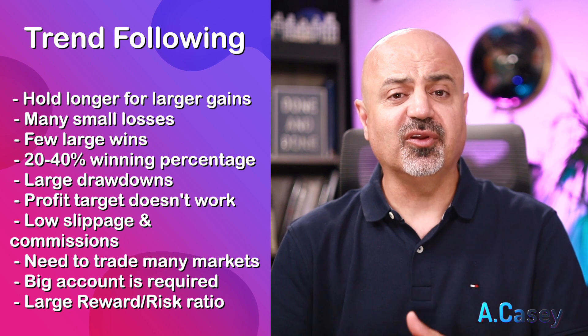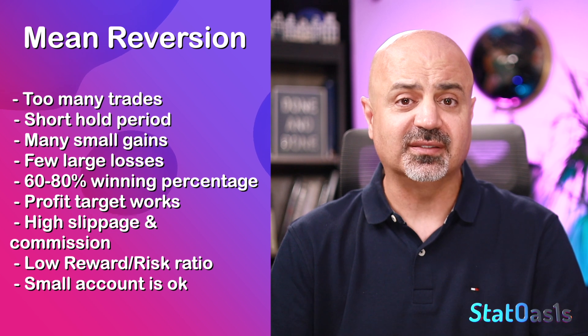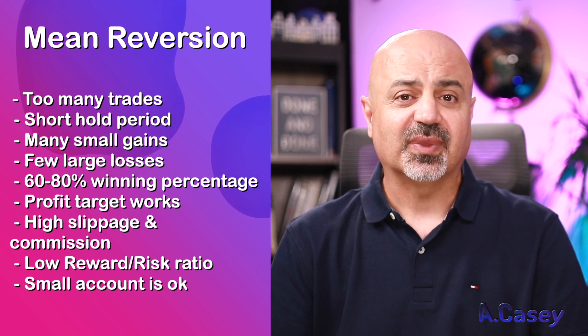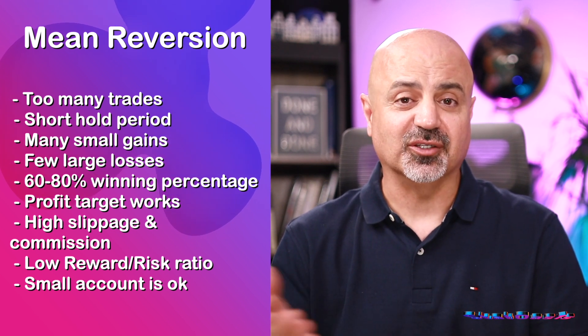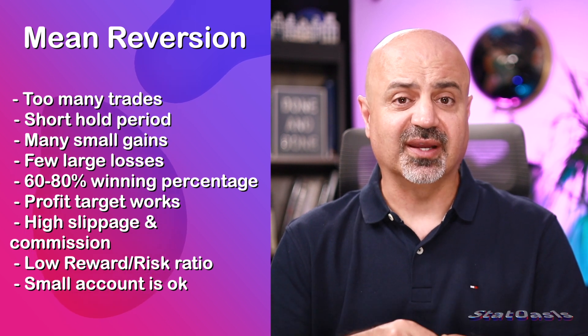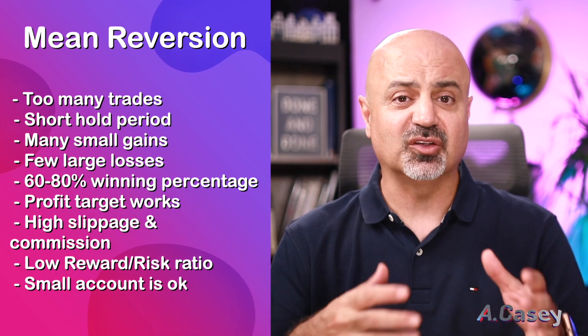Mean reversion strategies, on the other hand, have many trades and usually a 60 to 80 percent win rate, because they have many small gains and very few large losses. Therefore they have a small return-to-risk ratio. They are designed to capture small gains over shorter holding periods. A profit target works well with mean reversion because you don't want to stay opposite the trend too long — you just want to capture that fast counter-trend move and get out. Mean reversion is also psychologically easier to follow because you have more wins.